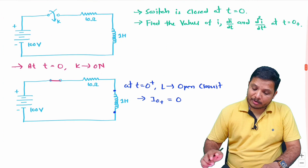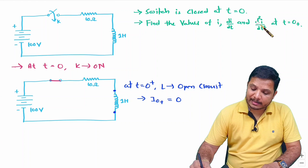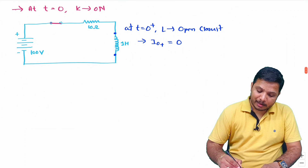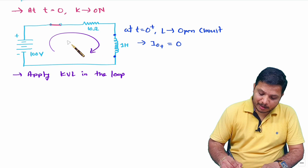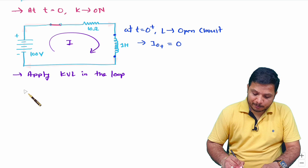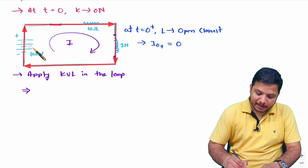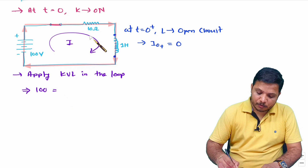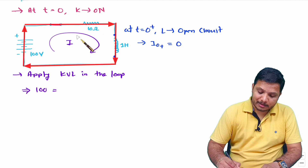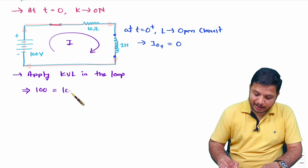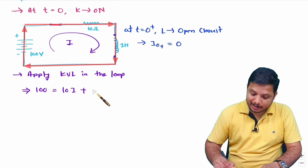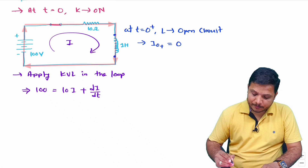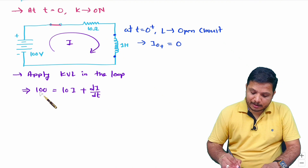Now for di/dt and d²i/dt², I need to apply KVL in this loop. Let the loop current be i. Applying KVL, the battery voltage is plus 100, and that equals the voltage across the inductor, which is L·di/dt. Since L equals 1 H, this simplifies to: 100 = di/dt.